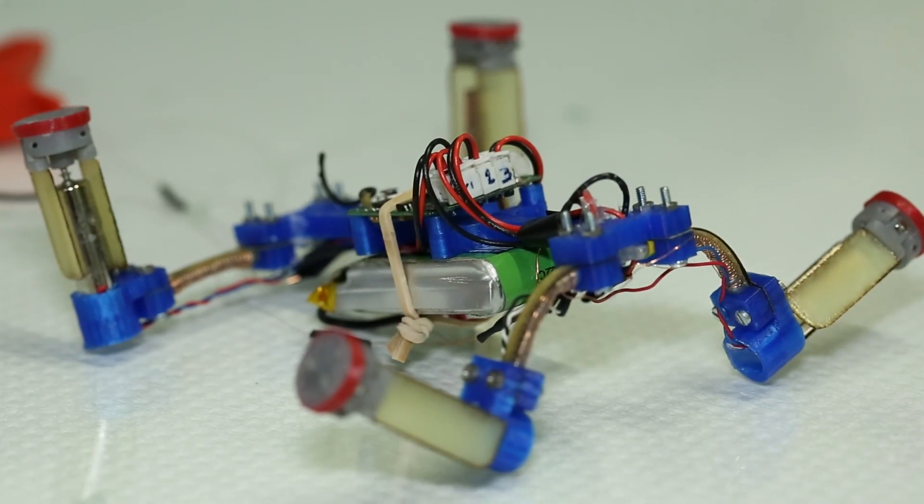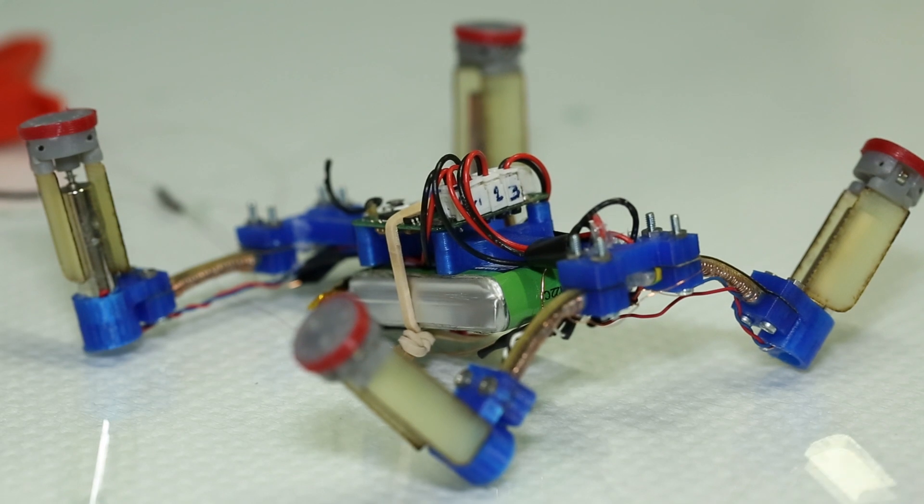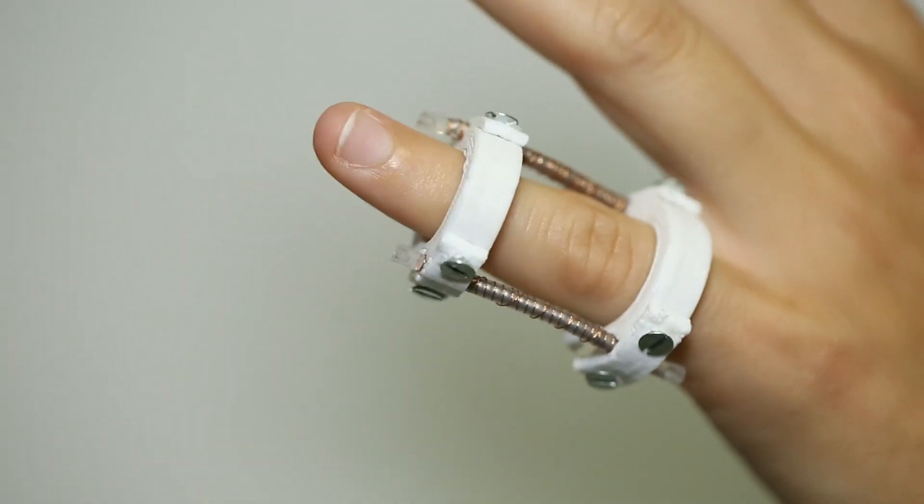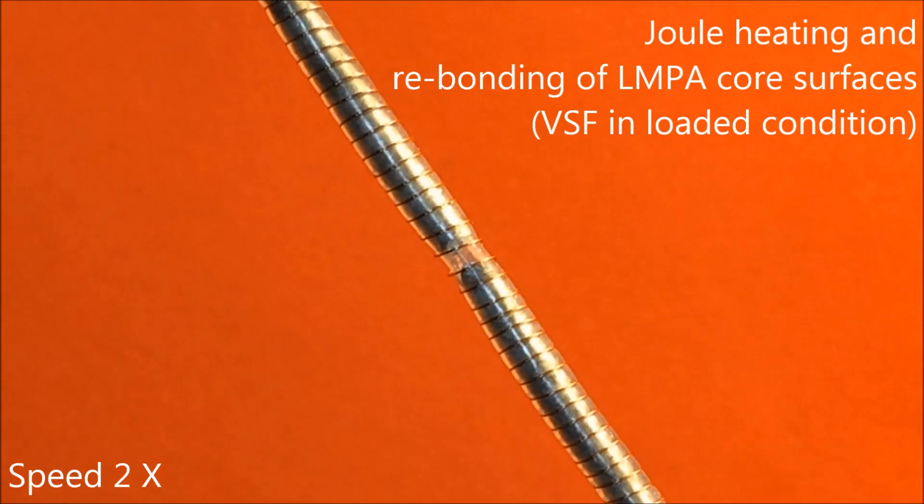For example, you can use it for robots that change their shape, for prosthetic devices, for furniture that can change shape. Because it's very thin, you can also use it in medical devices—you can couple it with different technologies in endoscopes, for example.